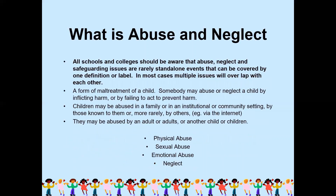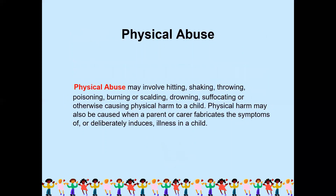What is abuse and neglect? All schools and colleges should be aware that abuse, neglect and safeguarding issues are rarely stand-alone events that can be covered by one definition. In most cases multiple issues will overlap. A form of maltreatment of a child — somebody may abuse or neglect a child by inflicting harm or by failing to act to prevent harm. Children may be abused in a family, an institutional or community setting, by those known to them or more rarely by others, for example via the internet or social platforms. Abuse may be carried out by an adult or another child.